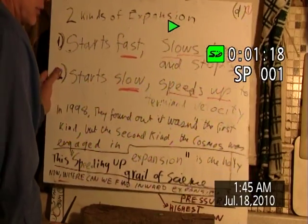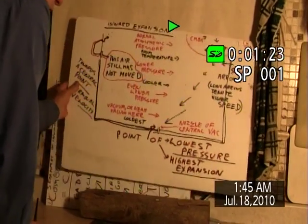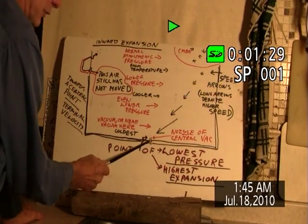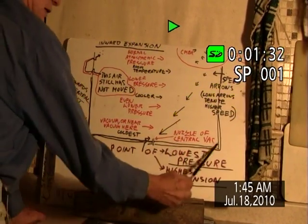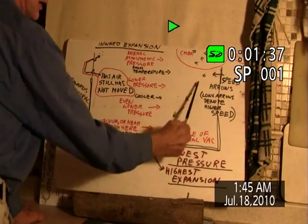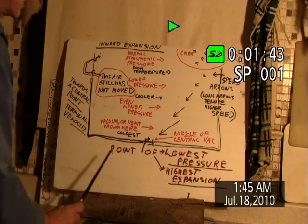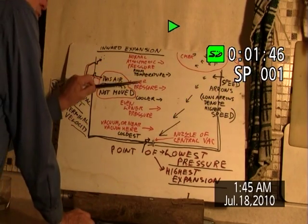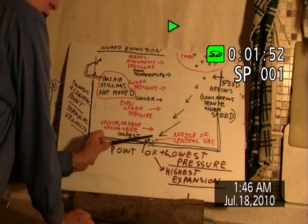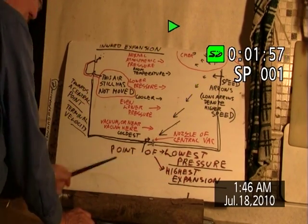Where can we find examples of this inward expansion? We don't know about inward expansion — let me tell you about it. This is a room with a vacuum cleaner sticking up through the floor in the middle. The nozzle of a central vac is operating here, and it pulls the air in slowly at first and faster and faster. Here it's normal pressure. The pressure falls till you get here — it's actually a vacuum or near-vacuum at this point. This is the point of lowest pressure or highest expansion.